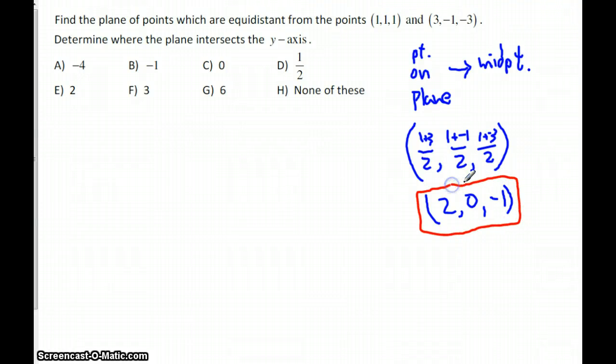Next up we need a normal vector to the plane. And we're going to get that by finding the vector that connects these two points. So we have our point and our normal vector, and then we'll put them together. So the normal vector to the plane will be found by finding the vector that connects the two points.